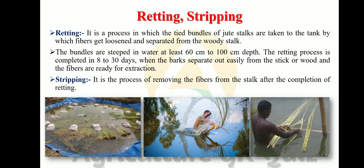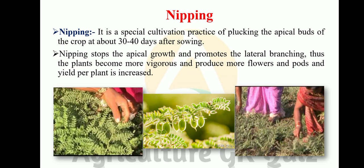Stripping is the process of removing the fibers from the stalk after completion of retting. In the first photograph, bundles of jute are steeped in water; in the second, the farmer is doing retting; and in the third, the farmer is doing stripping. Nipping is associated with gram — it is a special cultivation practice of plucking the apical bud of the crop at about 30 to 40 days after sowing.